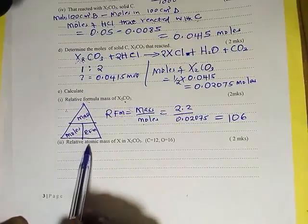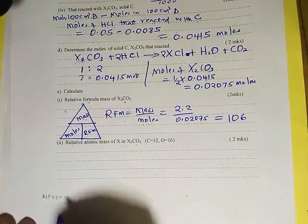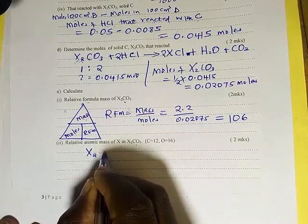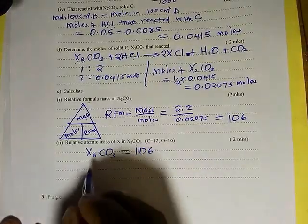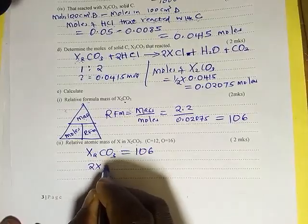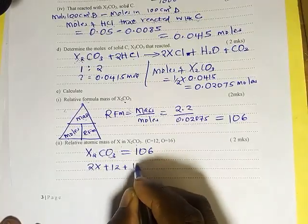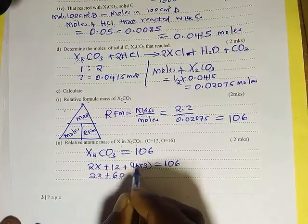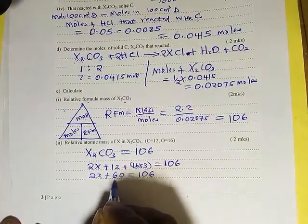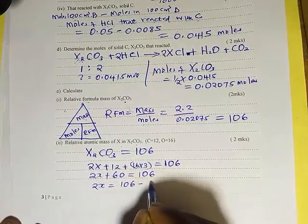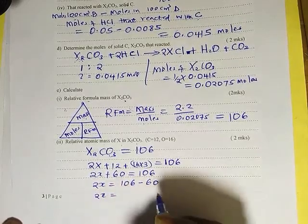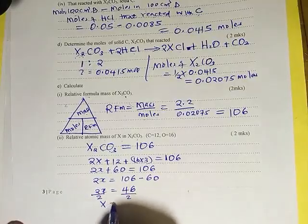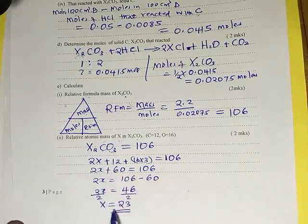Finally, calculate the relative atomic mass of X. Since the RFM of X₂CO₃ = 106, we write: 2X + 12 + (16 × 3) = 106, giving 2X + 12 + 48 = 106, so 2X + 60 = 106, therefore 2X = 46, and X = 23. The relative atomic mass of X is 23, which corresponds to sodium (Na).